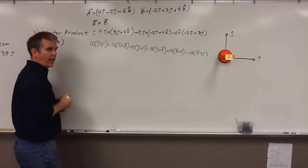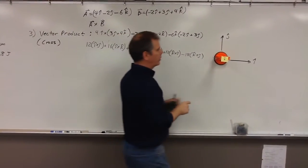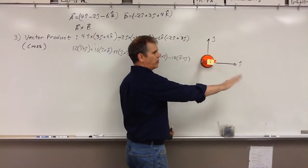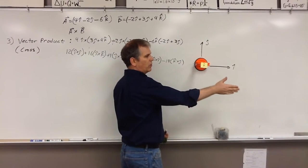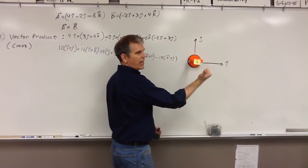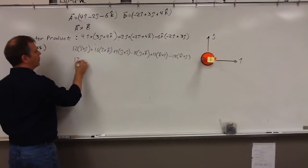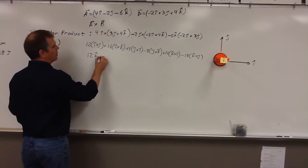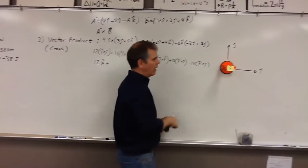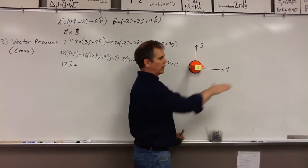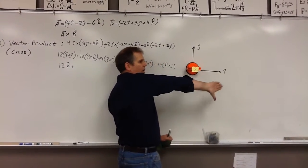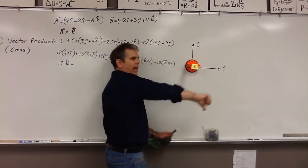So here we go. What's i cross j? Take your fingers, point in the direction of i first, then curl it in the direction of j. Notice my hand does not curl this way, so I have to move my wrist. i cross j gives me k. So this gives me 12k-hat, plus 16 times whatever this is. i cross k — I can't curl my hand that way, so I have to turn it around. i cross k gives me negative j-hat.